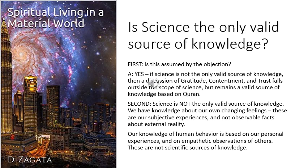The objection that normative ideals don't belong to the study of society emerges from the concept that science is the only valid source of knowledge. Because if there are other valid sources of knowledge — such as spiritual truths — then this objection would not arise. So the question is: is science the only valid source of knowledge? And the answer is obvious: it is not.